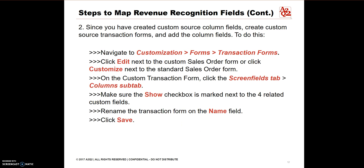The next part is creating custom source transaction forms. Navigate to Customization, select Forms, then click Transaction Forms. You'll click Edit or Customize, depending on whether the sales order is custom or standard. On the custom transaction form, click the Screen Fields tab, then click the Columns sub-tab. You should see a checkbox next to the 4 custom fields, and they should be ticked. Rename the transaction form in the Name field, and click Save.